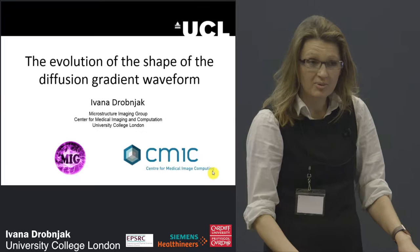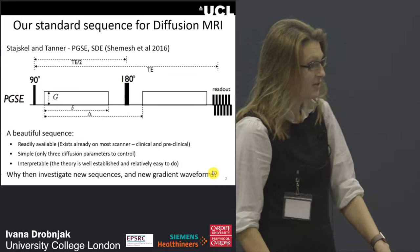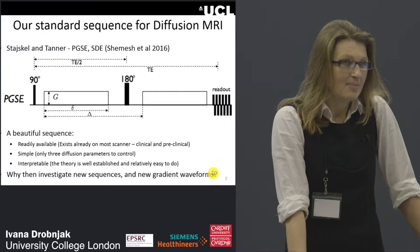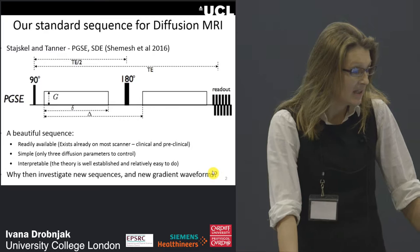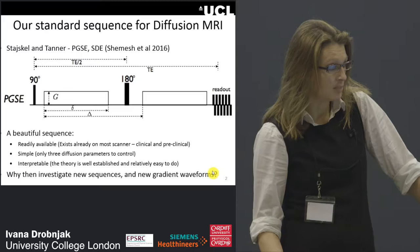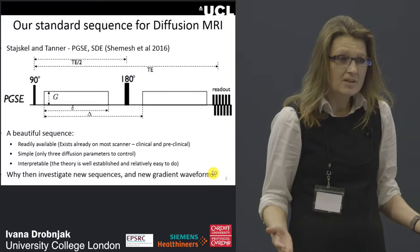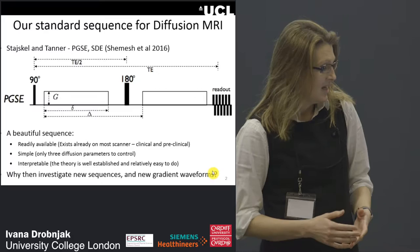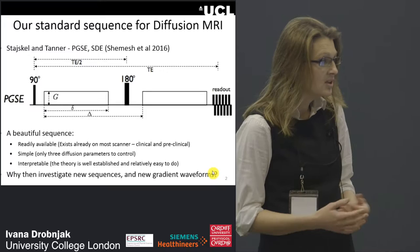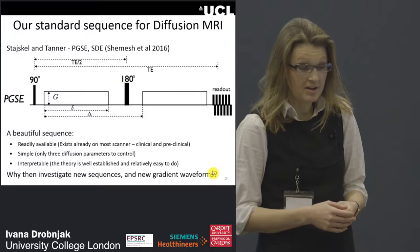I will today talk about the evolution of the shape of the diffusion gradient waveform, mainly drawing from my own personal research and experience. Our standard sequence for diffusion MRI has been the Stejskal-Tanner sequence for many years, also known as the pulsed gradient spin echo (PGSE) or single diffusion encoding (SDE) sequence. It's readily available on most scanners, has only three diffusion parameters, and the theory is well established. So why then investigate new sequences and different gradient waveforms?